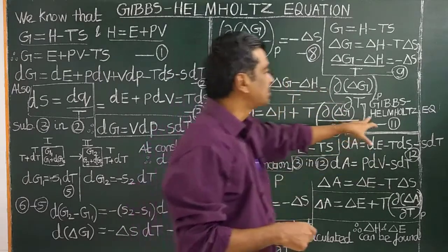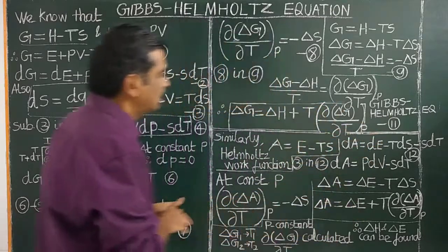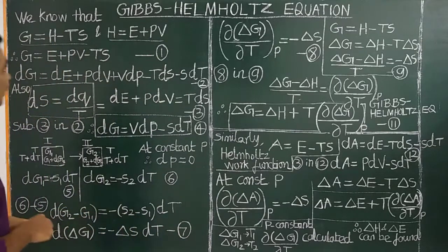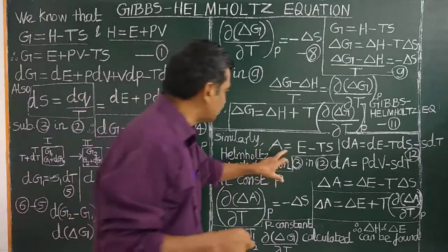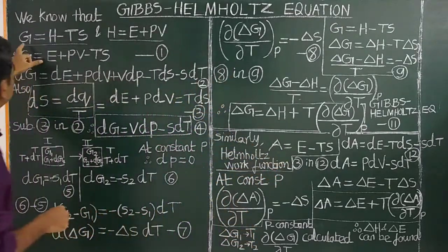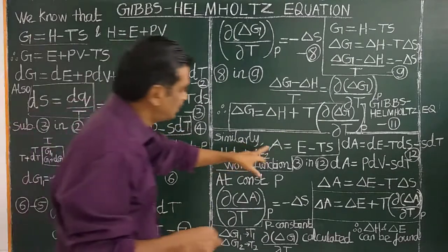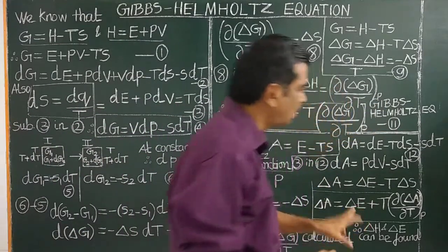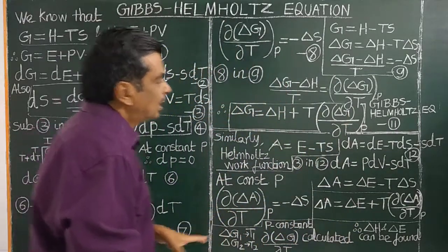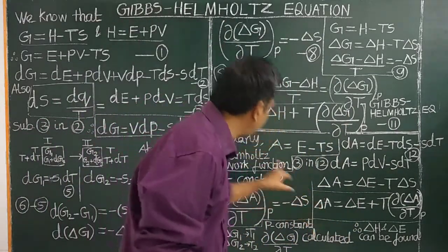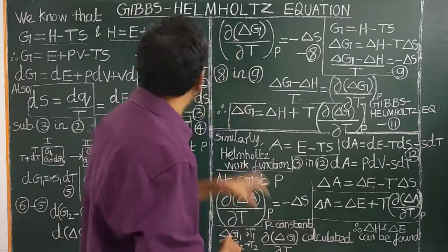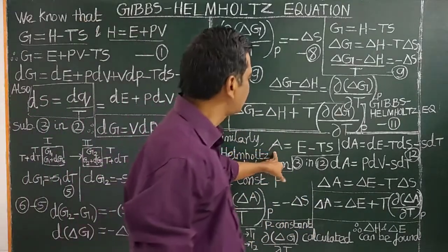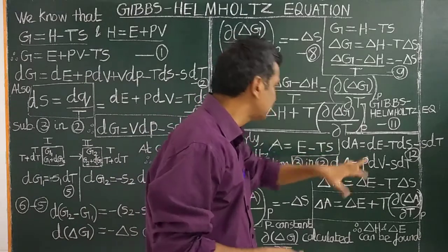This equation is called the Gibbs-Helmholtz equation. The Gibbs-Helmholtz equation should be remembered. Similarly, from the Helmholtz work function, this is obtained from the Gibbs free energy function. There is another form of the Gibbs-Helmholtz equation obtained from the Helmholtz work function.